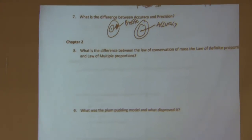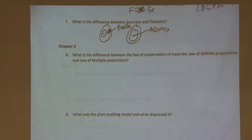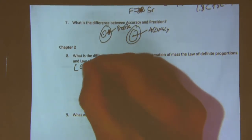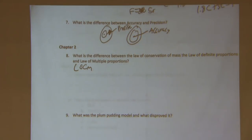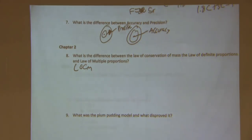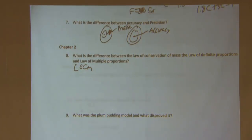The law of conservation of mass: mass cannot be created or destroyed. Whatever you have on your product side, you're going to have on your reactant side. If you have 100 grams of reactants, you're going to have 100 grams of products. Products equal reactants.